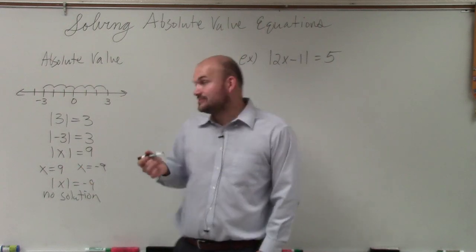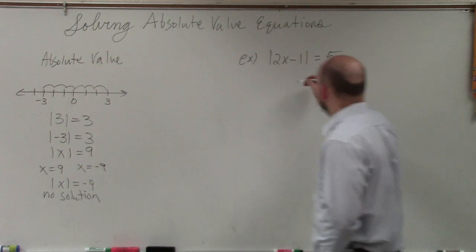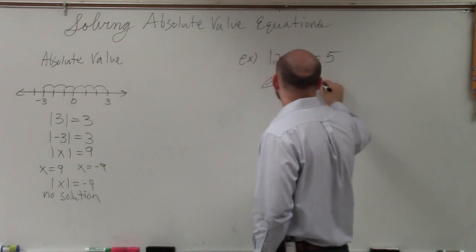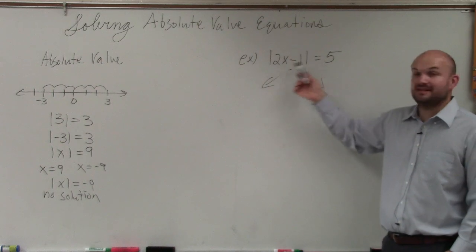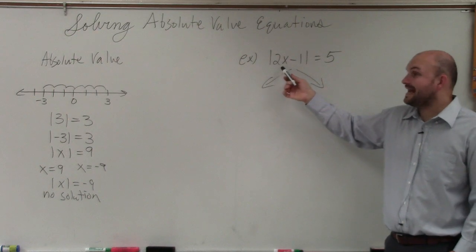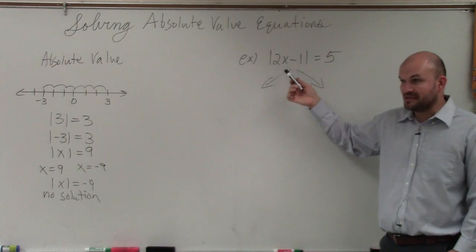So to get rid of the absolute value to solve, we're going to create two cases. Our two cases are going to be one case when inside of this is a positive 5 and when inside this quantity is a negative 5.